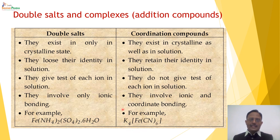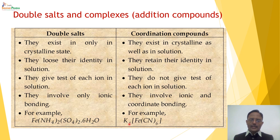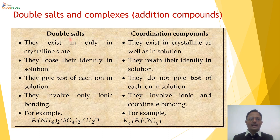Similarly, potassium hexacyanoferrate can be obtained by mixing solutions of potassium cyanide and ferrous cyanide and evaporating the solvent. When we dissolve the double salt in solution, it gives the test of every ion present — Fe²⁺, NH4⁺, and sulfate. But if we dissolve K4[Fe(CN)6] in solution, it gives the test of K⁺ but does not give the test of Fe²⁺ or CN⁻ ions. This means there is a different type of bonding in the coordination compound, which is the fundamental difference between a double salt and a coordination compound.